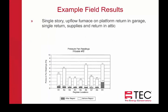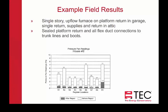The next example is a single story with an upflow furnace on a platform return in the garage. It had a single return and supplies and returns in the attic. They sealed the platform return, all the flex duct connections to the trunk lines, and the boots. Typically the flex duct itself doesn't leak very much, but the metal connection between the takeoff and the trunk line needs to be sealed, and then the connection between the boot and the ceiling needs to be sealed too. In doing that, they dropped all the pressures to one or less. Duct leakage before was about 250 CFM, and after they dropped it down to less than 85 CFM.